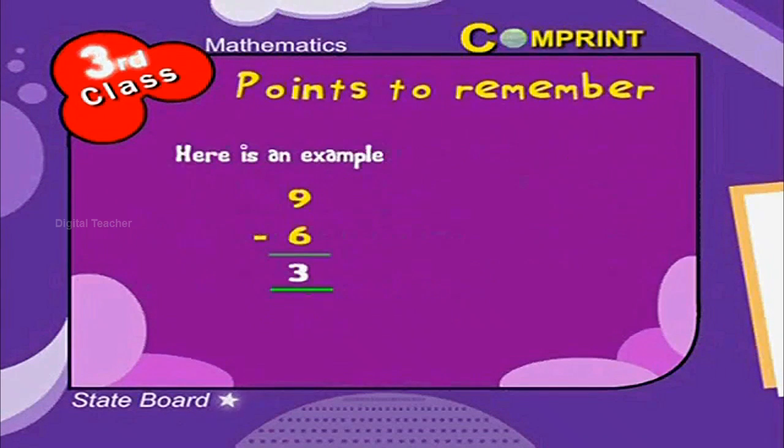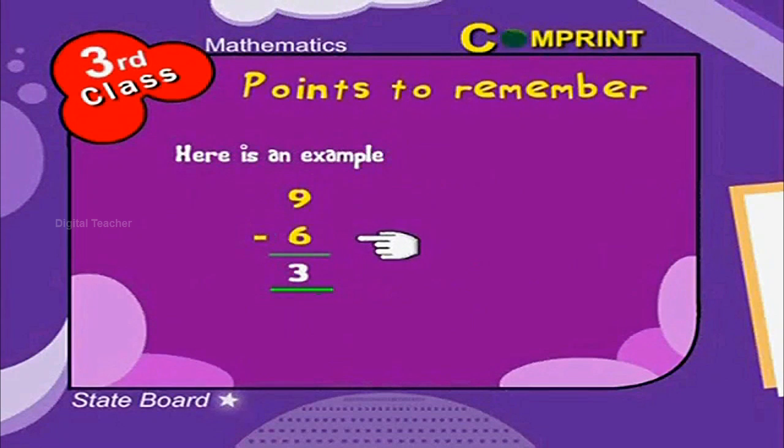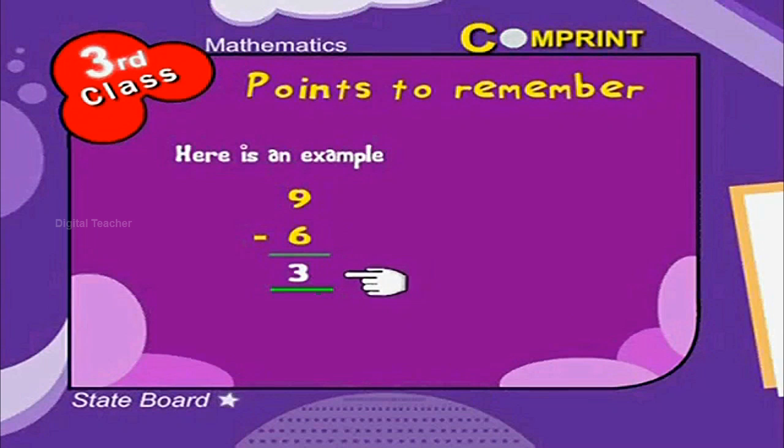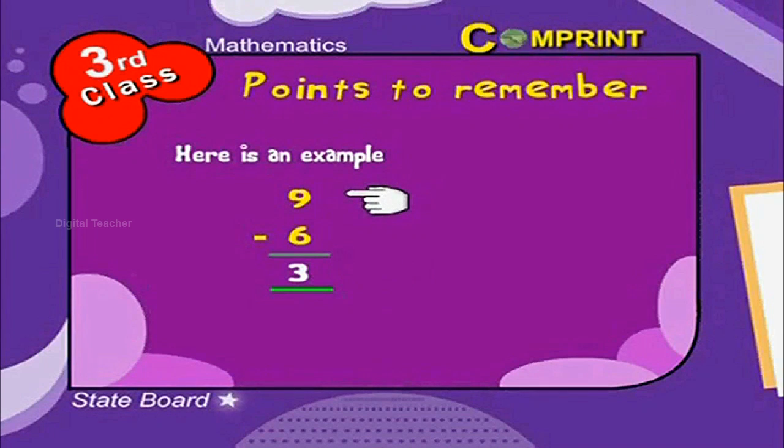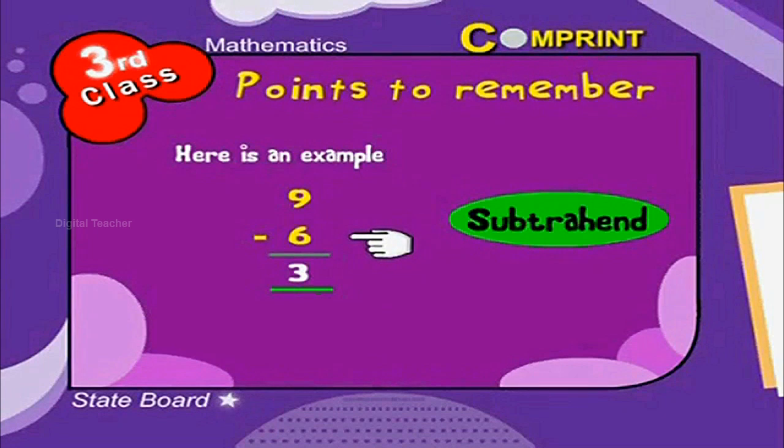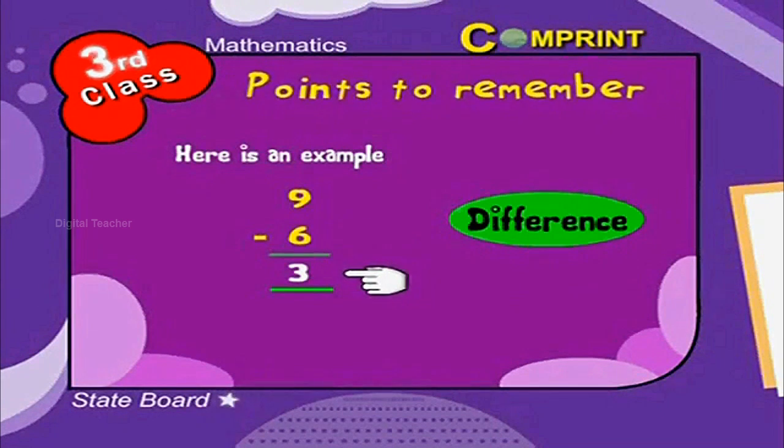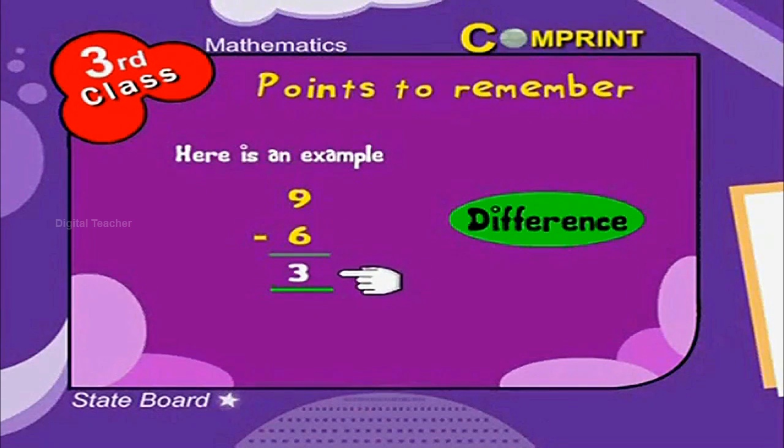Here is an example. 9 minus 6 is equal to 3. Here, 9 is called minuend and 6 is called subtrahend and the answer 3 is called difference.